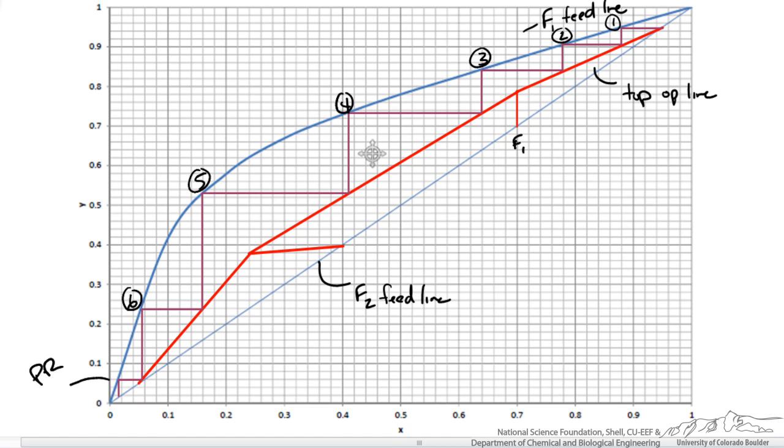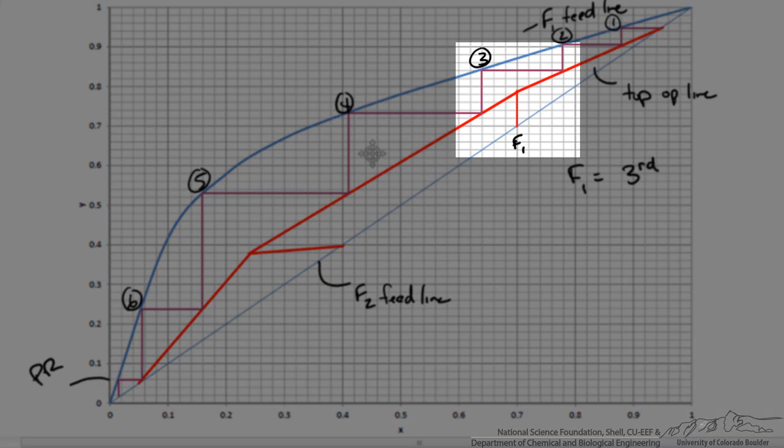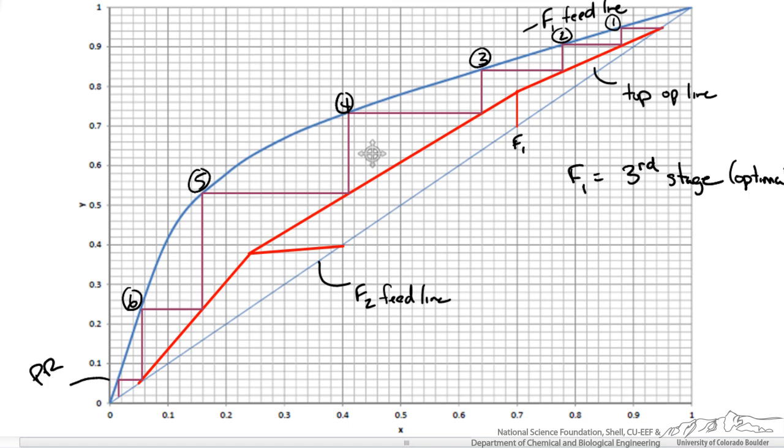So we have 6 and our partial reboiler. Our optimal feed for our first plate is at the third stage. So feed 1 is fed at the third stage. Now that is optimal and our feed 2 would be fed at the fifth stage.